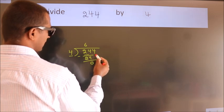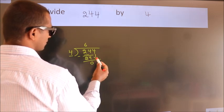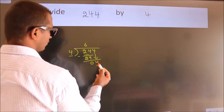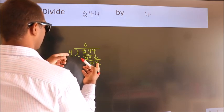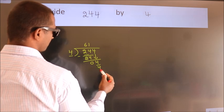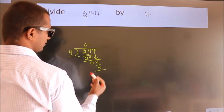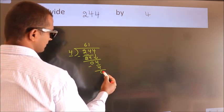After this, bring down the next number. So 4 down, so 4. When do we get 4? In the 4 table, 4 times 1 is 4. Now we subtract, we get 0.